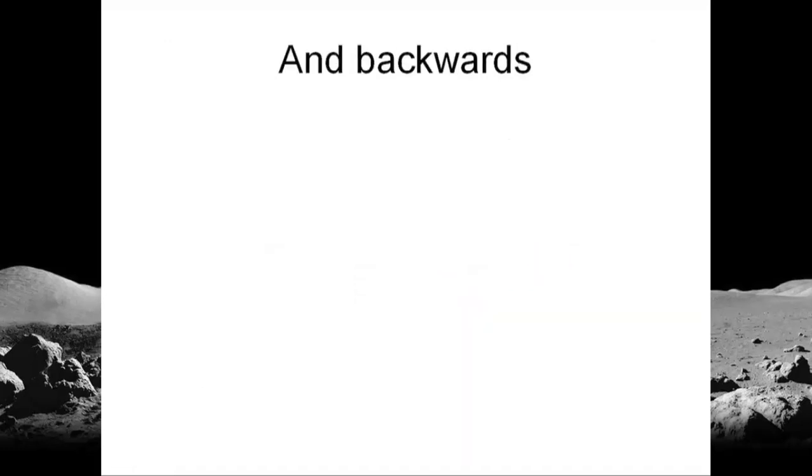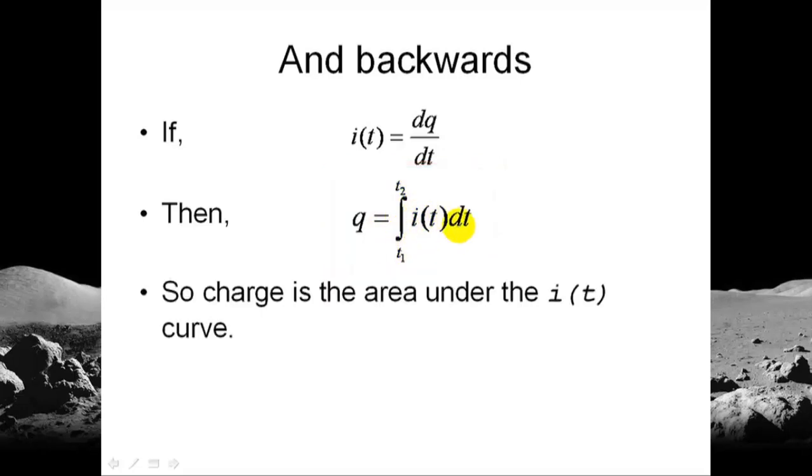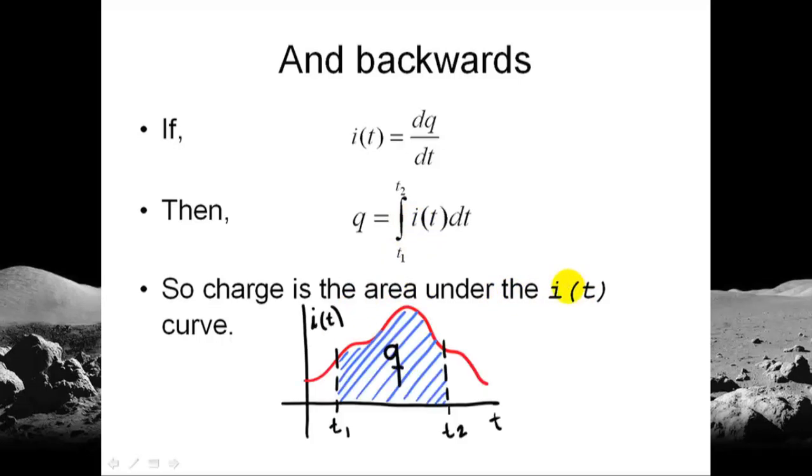This works backwards, too. If the current is the derivative of q with respect to time, we can integrate that equation on both sides and get that the integral of i of t is equal to the charge. Like this. The charge that flows through the checkpoint between t1 and t2 is the integral of i dt. Graphically, the charge that flows through the checkpoint between t1 and t2 is the area under the i of t curve. This area.